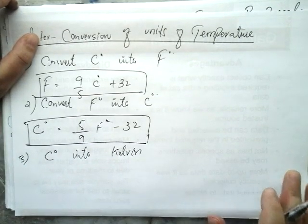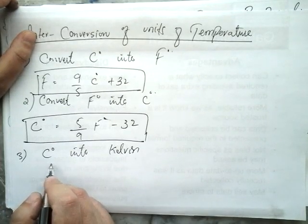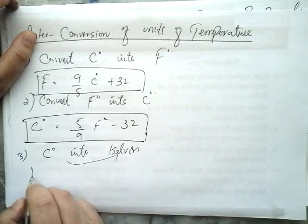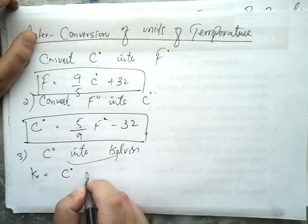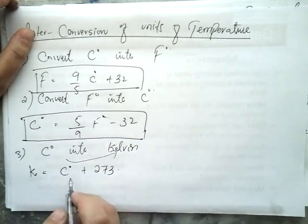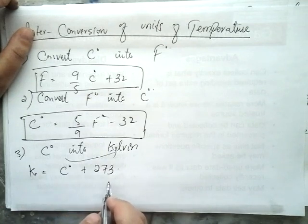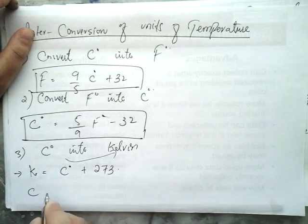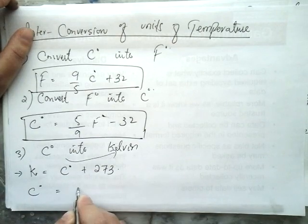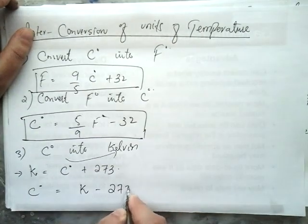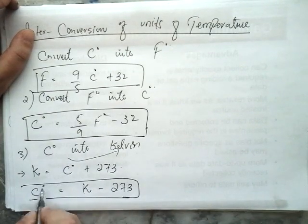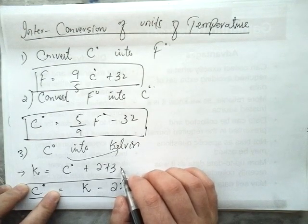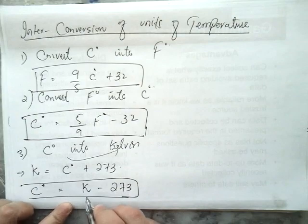The third important conversion is Celsius to Kelvin. In most questions, temperature is given in Celsius and you must convert to Kelvin: K = °C + 273. Conversely, to convert Kelvin to Celsius: °C = K − 273. This relation is used very frequently in gas law calculations.